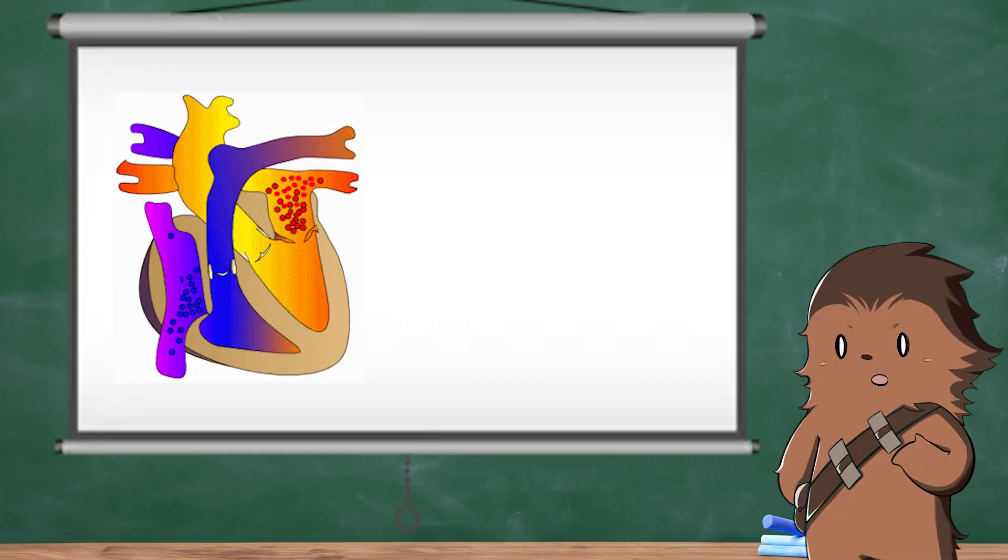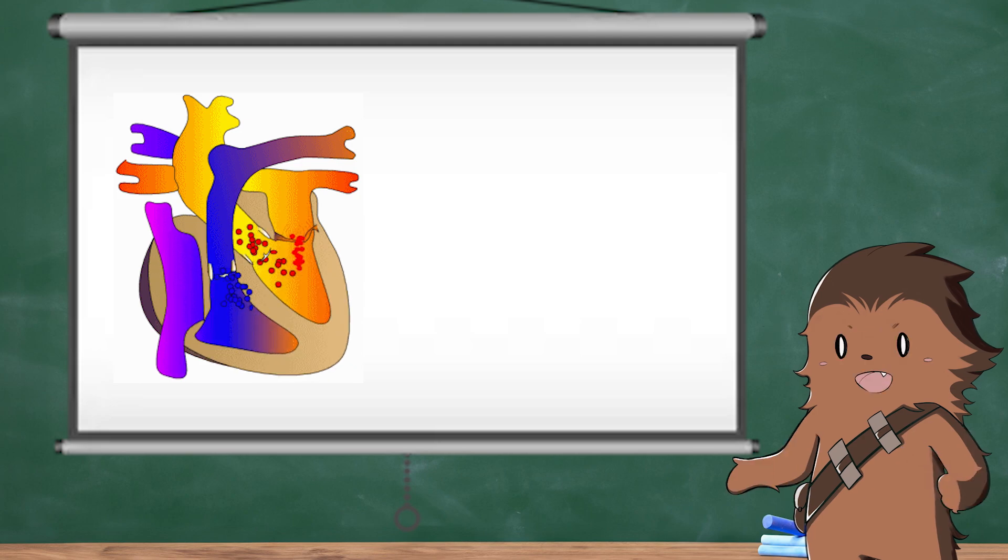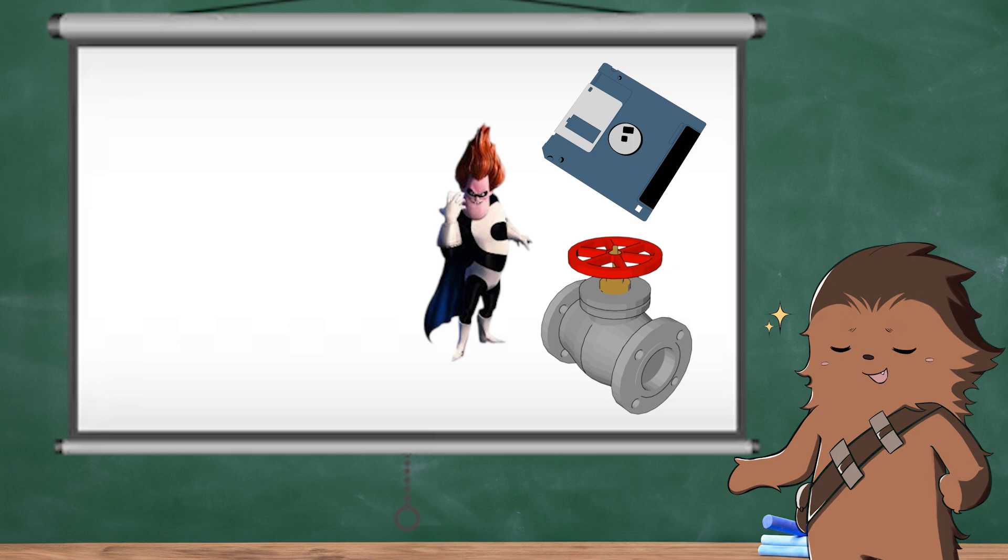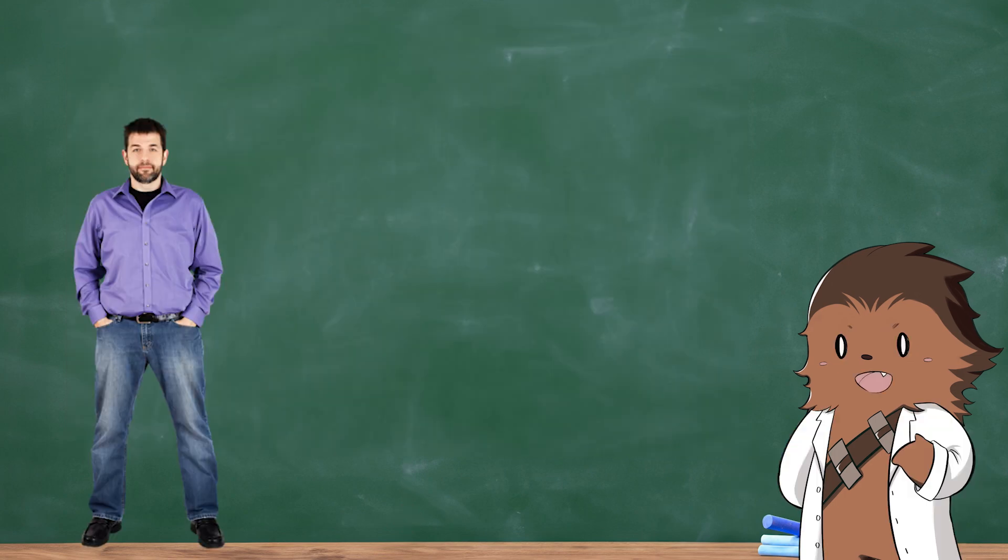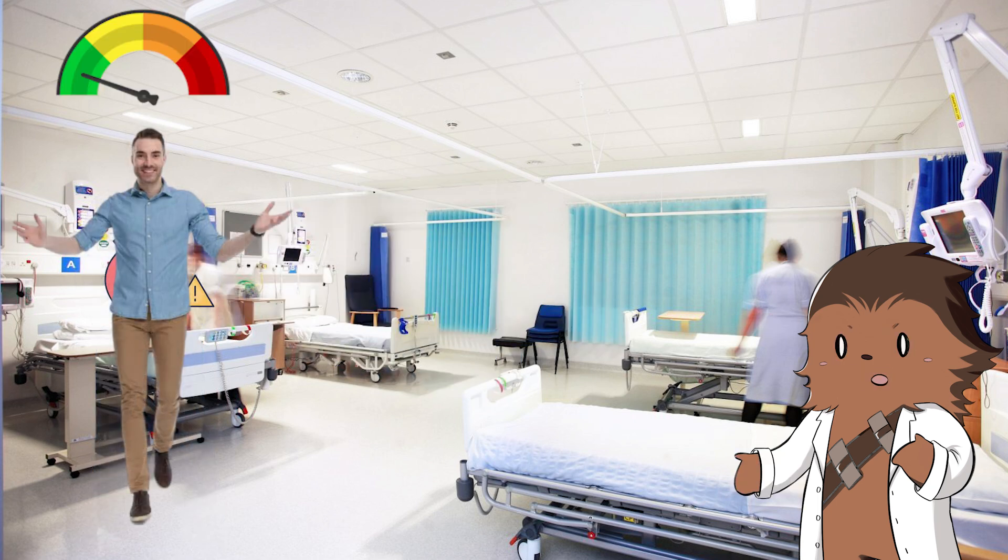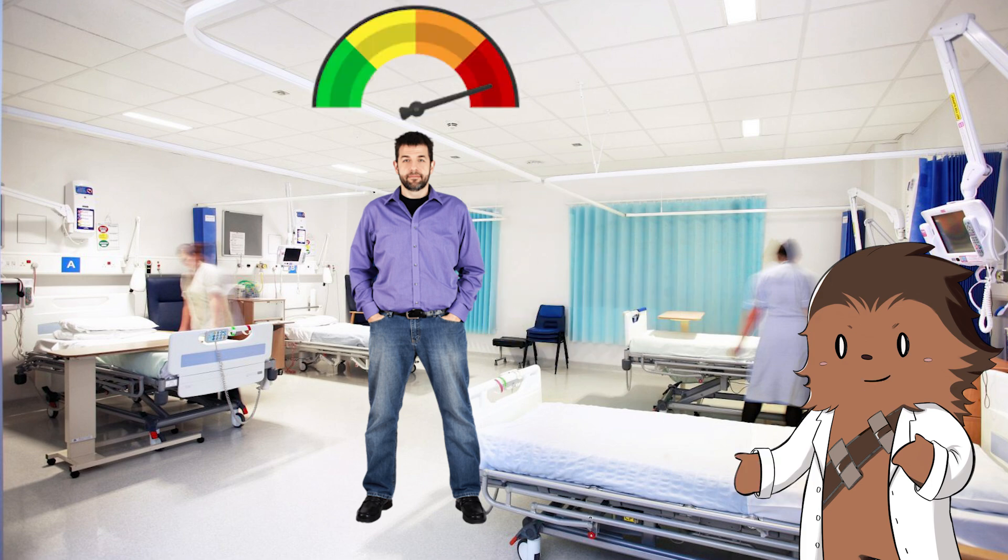Mitral valve prolapse or MVP is a condition in which your mitral valve flops back into your left atrium. That's why it's sometimes called floppy valve syndrome. This floppiness may prevent your valve from closing as tightly as it should. MVP is often harmless and doesn't cause symptoms for most people, but some people with moderate or severe prolapse have symptoms and may need treatment.